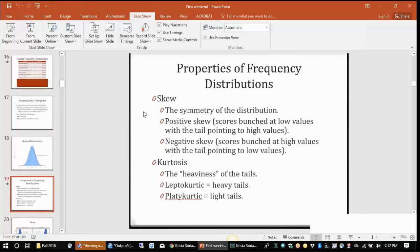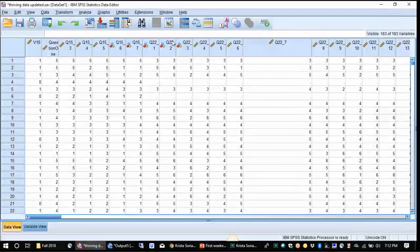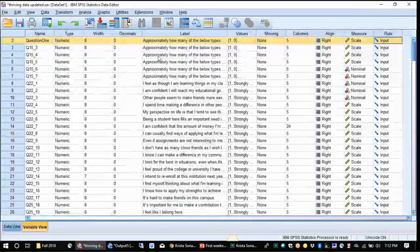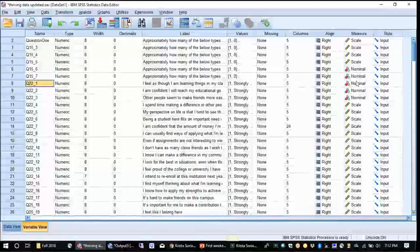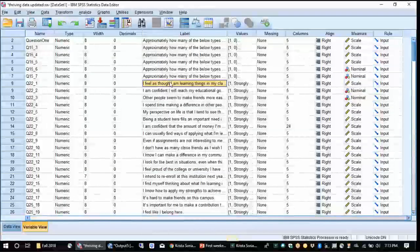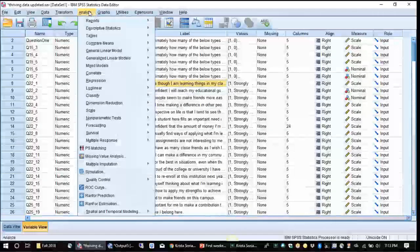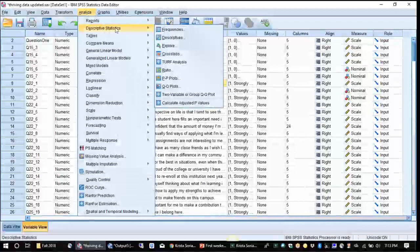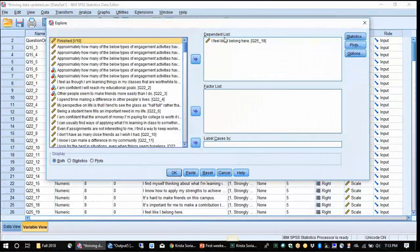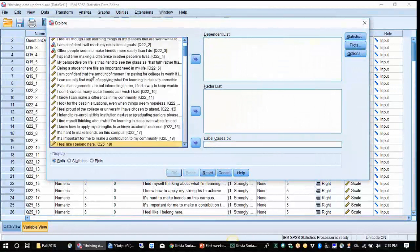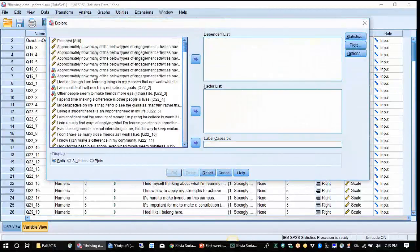So there are some ways of analyzing your data to see whether or not we have a normal distribution. Before I talk a little bit about skew and kurtosis, I want to actually examine some of our data. So let's do that. I'm going to pull up the thriving data, so follow along with me if you can. And I changed Q22 underscore 1 to nominal data, but I want to change it back to scale. Because that way SPSS will know for us that yes, we're dealing with numbers.